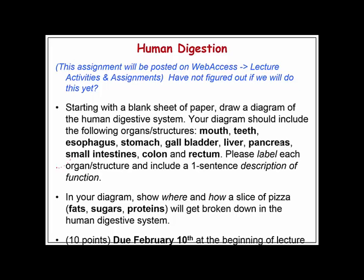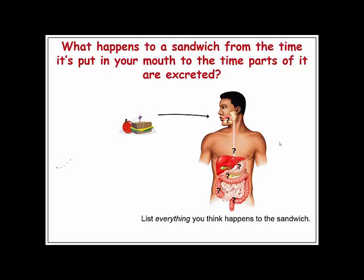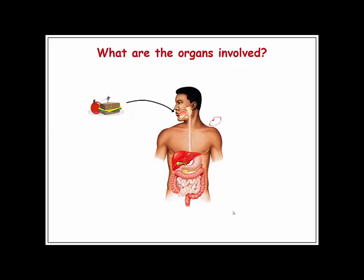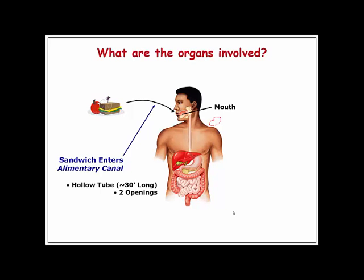For this class, I want you to be able to follow food as it goes from the mouth down to the anus and know what organs are involved and what they do. We have a hollow tube roughly 30 feet long with two openings. The organs are the mouth, the esophagus, the stomach, the small intestine, and the large intestine.